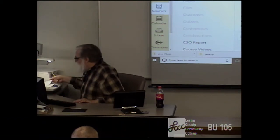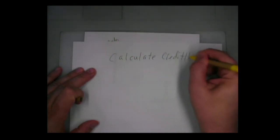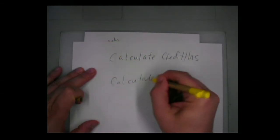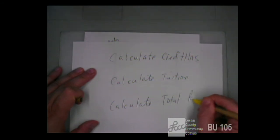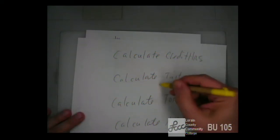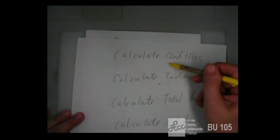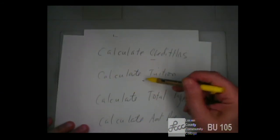For example, I would have four functions: calculate credit hours, calculate tuition, calculate total payments, and calculate amount due. Each one does one really narrow defined task. They can call each other — to calculate tuition, you have to call calculate credit hours. You shouldn't have the code duplicated from calculate credit hours inside calculate tuition; you should simply call the function and use the results from it.